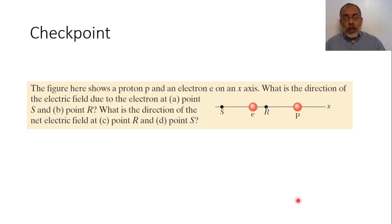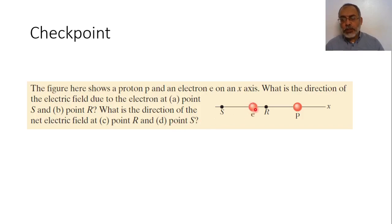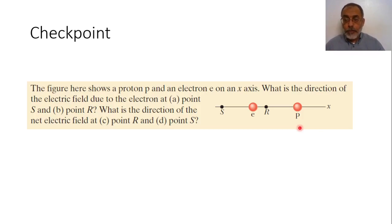As an example, the figure shows a proton B and an electron E on the X axis. What is the direction of the electric field due to the electron at points S and R, and what is the direction of the net electric field at points R and S? Since we are talking about an electron and a proton, we have a negative charge and a positive charge — both with the same magnitude, effectively −Q and +Q, where Q = 1.6 × 10⁻¹⁹ coulombs.